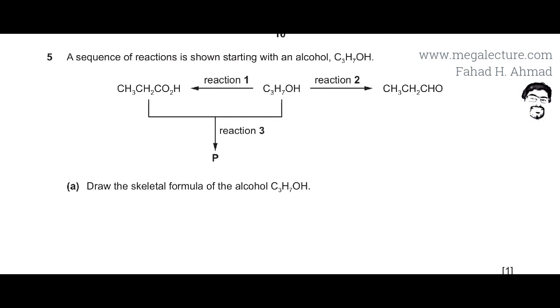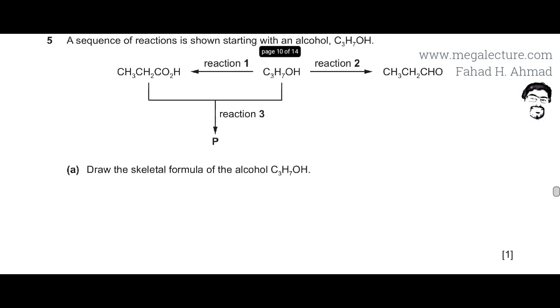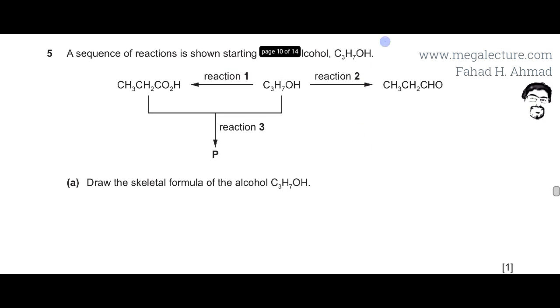So we need to draw the skeletal formula of the propanol. Remember OH is bonded to the carbon atom at the end because you would notice that this aldehyde that's being formed or this carboxylic acid that is being formed from propanol, the OH is right at the end.